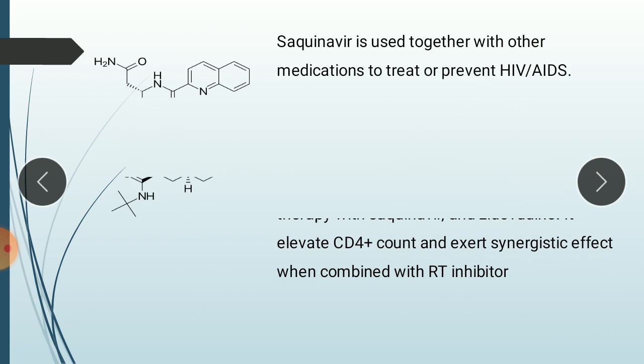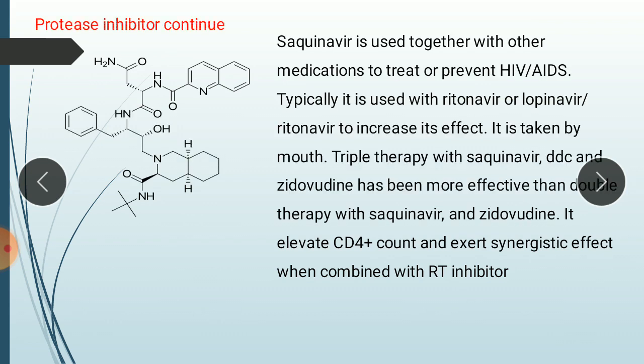The first example of this category is Saquinavir. It is used together with other medications to treat or prevent HIV/AIDS, typically with ritonavir or lopinavir. Triple therapy with saquinavir, lamivudine and zidovudine has been more effective than double therapy with saquinavir and zidovudine. It elevates CD4 count and exerts a synergistic effect when combined with reverse transcriptase inhibitors.